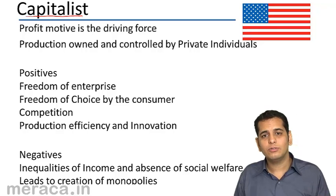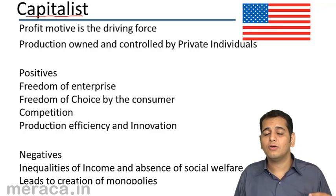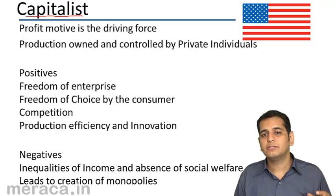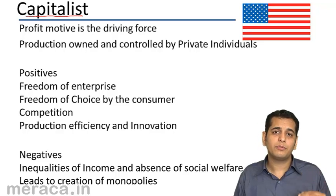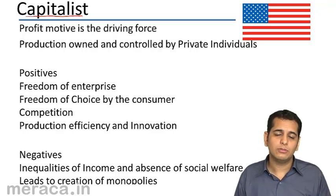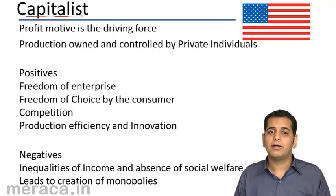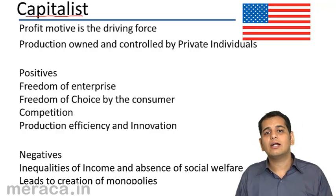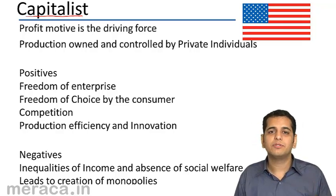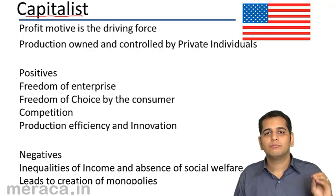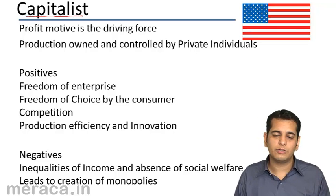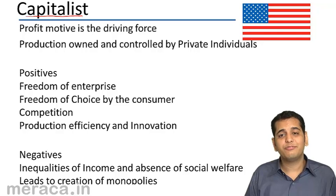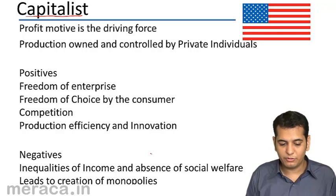They can own, buy, and sell all the factors of production, all the properties — whatever properties they want to buy they can own, whatever they want to sell they can sell. They can start any business which is profitable to them. So let's see what are the features of a capitalist economy.